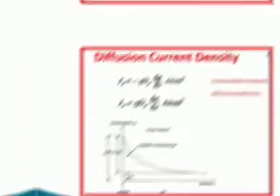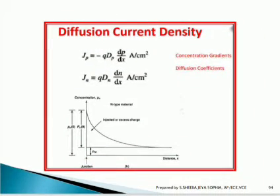Talking about the diffusion current density: Jp is equal to minus q·Dp·(dp/dx), which is the concentration gradient. And for electrons, Jn is equal to q·Dn·(dn/dx), where Dp and Dn are the diffusion coefficients.